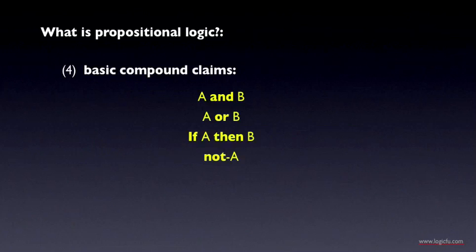In propositional logic, you construct compound claims out of a small number of basic logical connectives. These are the basic types. You form conjunctions using 'and,' you form disjunctions using 'or,' you form conditionals using 'if-then,' and you form contradictories using 'not.' Once you know the rules for how the truth value of these compound claims is a function of the truth values of the component claims, then you can evaluate the truth value of more complex claims like this.